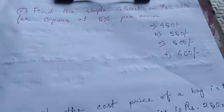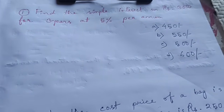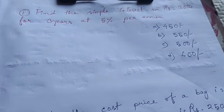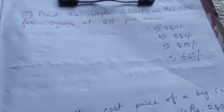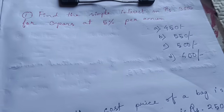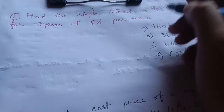The first question is: find the simple interest on Rs. 3000 for 3 years at 5% per annum.